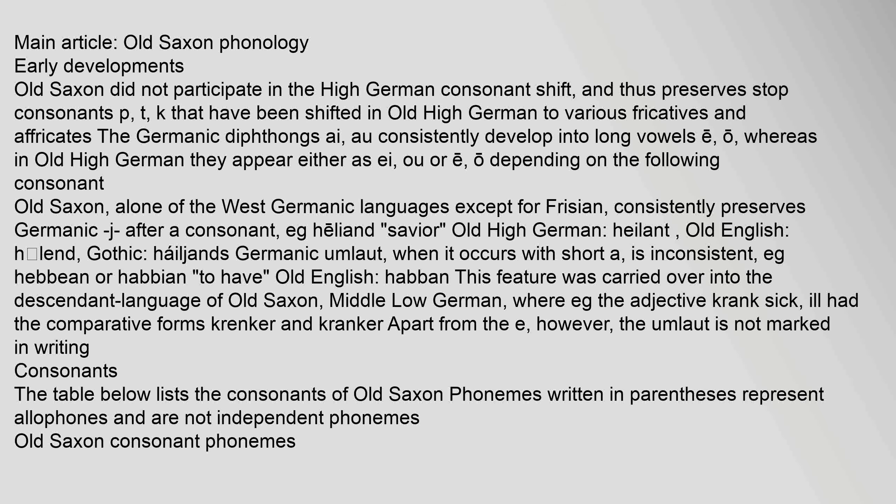Old Saxon did not participate in the High German consonant shift, and thus preserves stop consonants p, t, k that have been shifted in Old High German to various fricatives and affricates. The Germanic diphthongs ai and au consistently develop into long vowels ē and ō, whereas in Old High German they appear either as a/o or e/o depending on the following consonant. Old Saxon, alone of the West Germanic languages except for Frisian, consistently preserves Germanic J after a consonant, e.g. Heliand 'Saviour' (Old High German: Heiland, Old English: Hælend, Gothic: Hāljands).